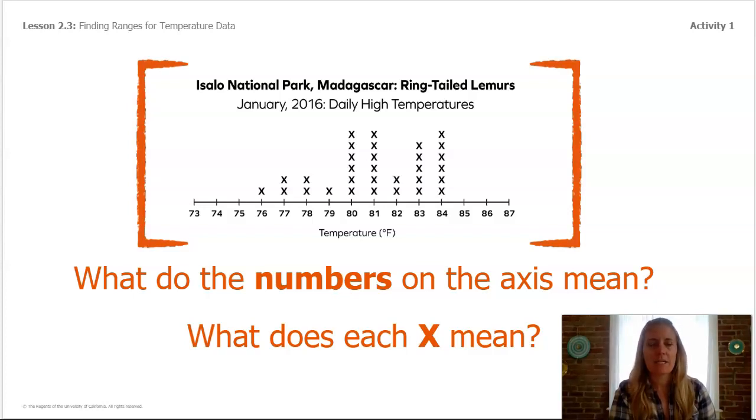Do you see the subtitle of the graph? January 2016, daily high temperatures. This can help you understand what each X shows. In this case, it shows every single day.